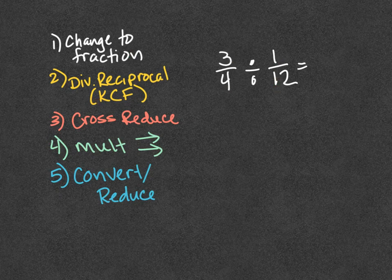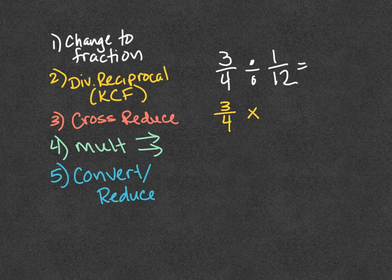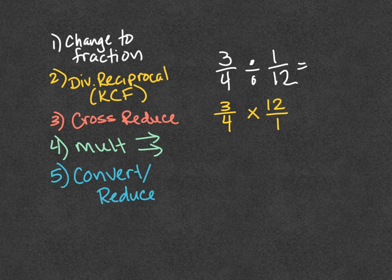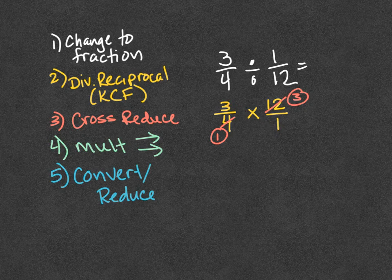Keep, change, flip. Keep 3/4 the same. Change division to multiply. Flip to the reciprocal of 1/12, which is 12/1. Cross-reduce. I have 4 and a 12 here. 4 divides equally into both of those, so I'm going to use that. 4 goes into 4 once, 4 goes into 12 three times. Cross-reduction here, cross-reduction here. No can do. That's a 1, so it's not going to change anything.